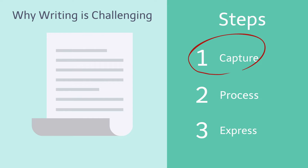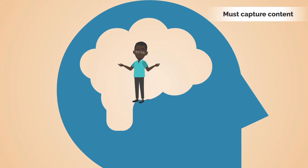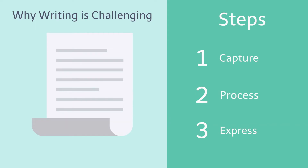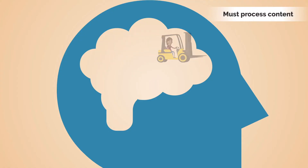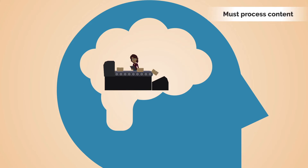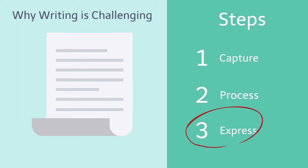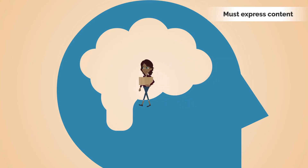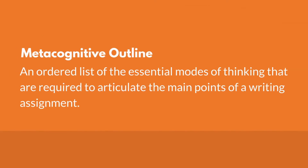Number one, students must capture information about the topic — whether in class or reading, they must acquire information about the concepts being presented. Number two, students must cognitively process the information, using their minds to transform the content into usable knowledge. And number three, students must express that information in a coherent manner — they must effectively communicate the information. Dr. Miller then learned how to use metacognitive outlines to reduce the cognitive burden that was the true obstacle behind students' avoidance.